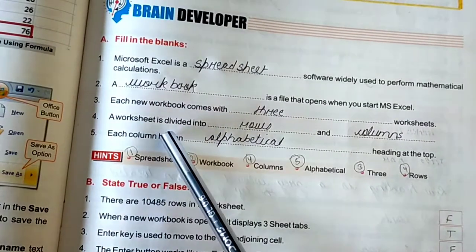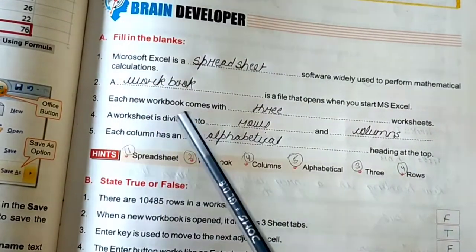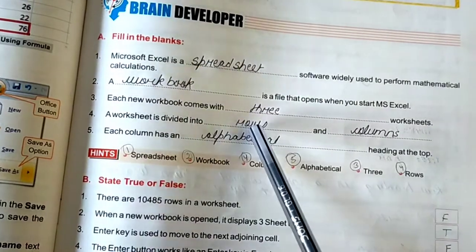Fourth, a worksheet is divided into rows and columns.